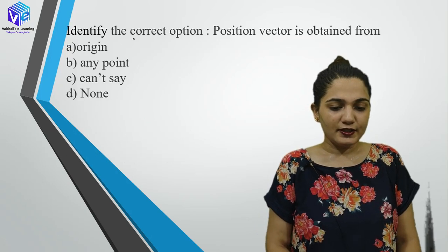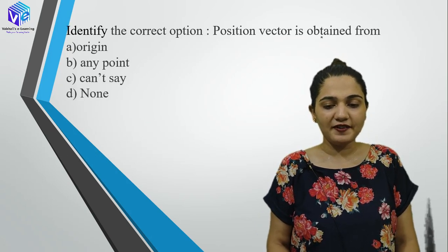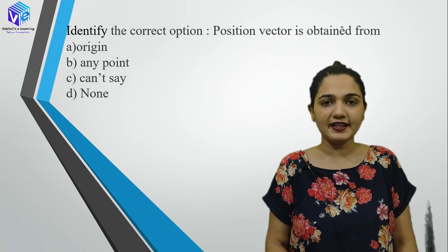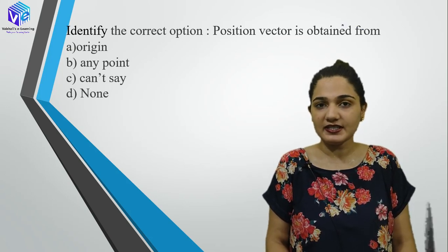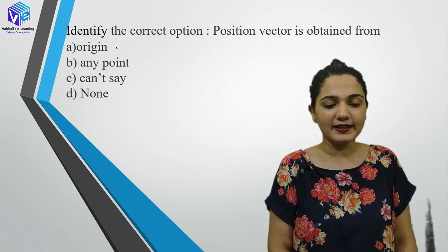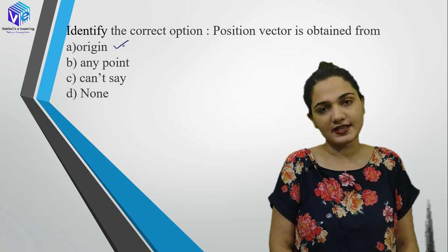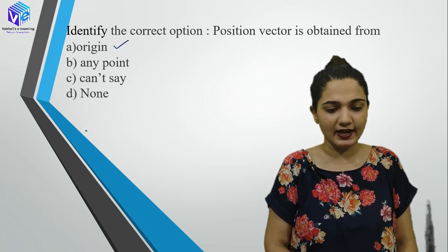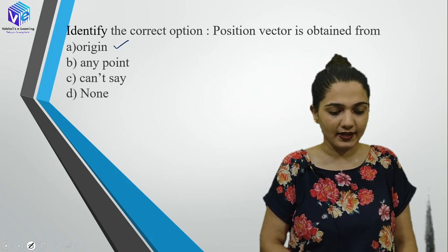Coming to the next question: identify the correct option — position vector is obtained from where? We discussed this in detail when covering Cartesian Coordinate System. The position vector is the vector drawn from the origin to any point. So the correct answer will be option A.